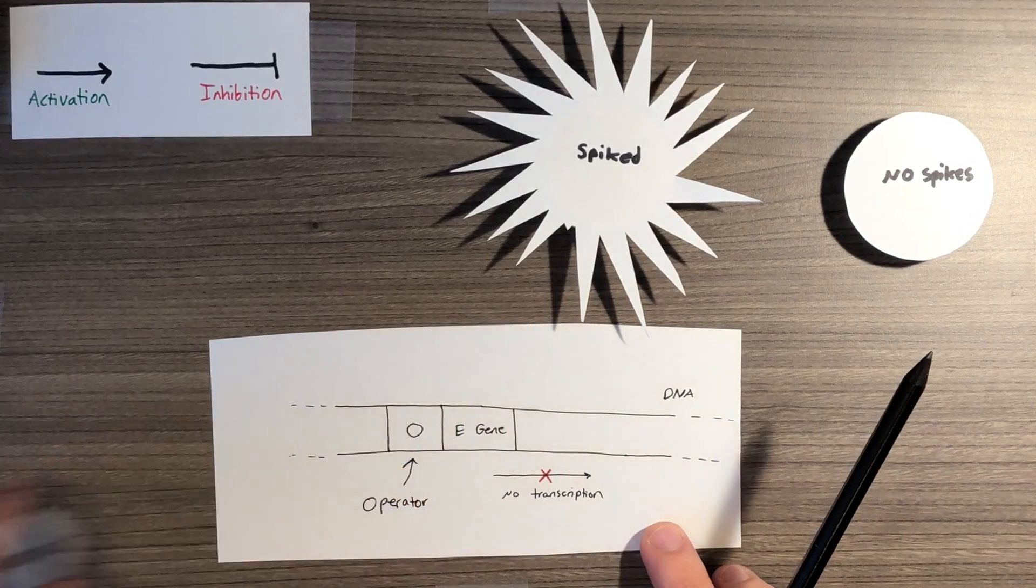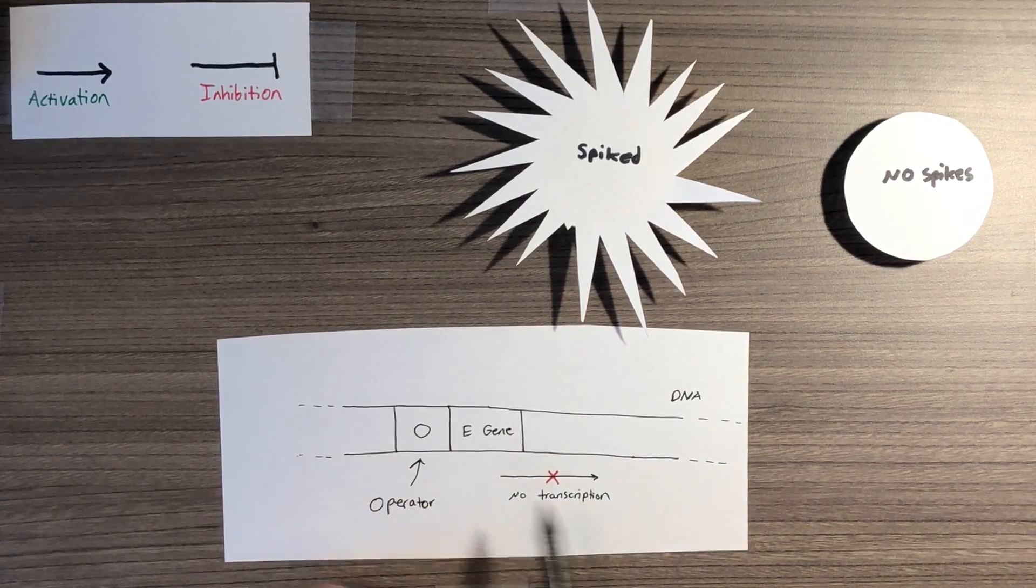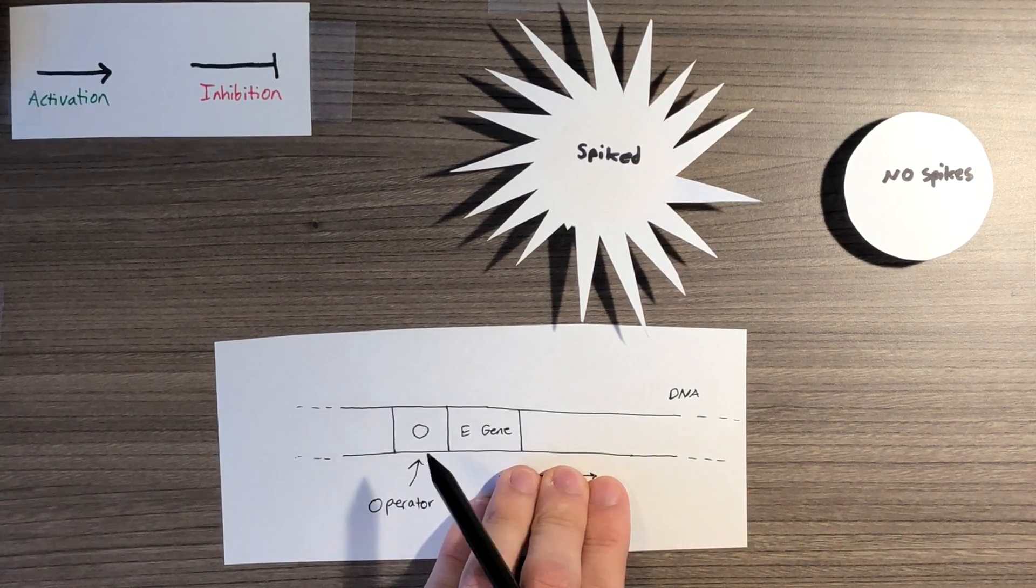A different cell, though, might not be expressing that repressor and will be able to stimulate E, allowing the production of spikes to occur.